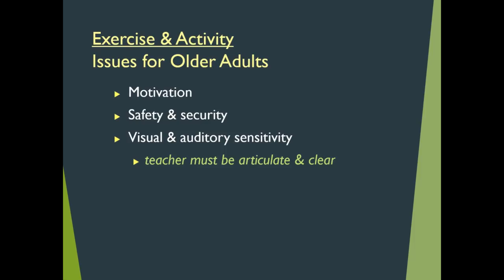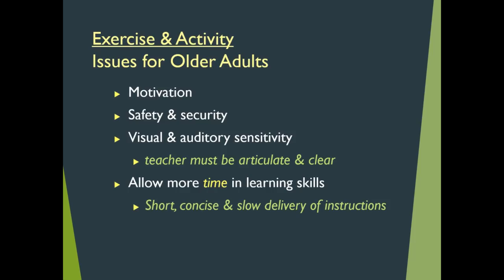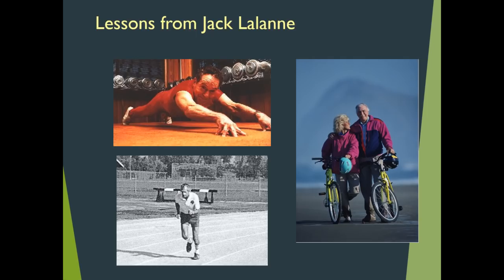The fastest sense organ is still the skin, so if you're going to warn an elderly individual about impending trouble, the best way is to touch them — they'll respond and you can lead them away. In an exercise setting, touch in terms of assurance is something they probably appreciate. They may not see you very well when you're demonstrating, but providing kinesthetic feedback through touch is a way to go. Overall, you must allow more time for learning skills and give short, concise instructions.